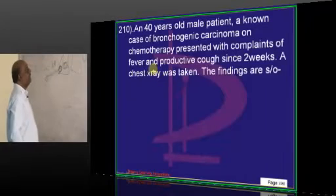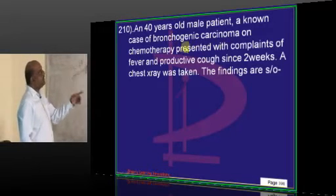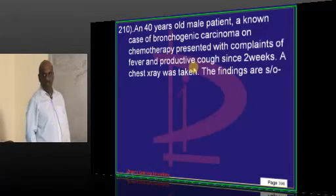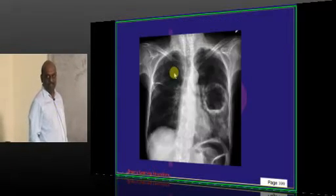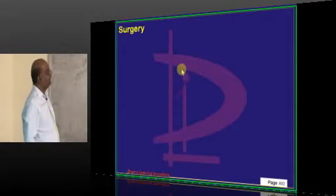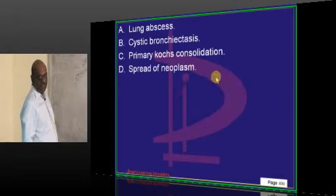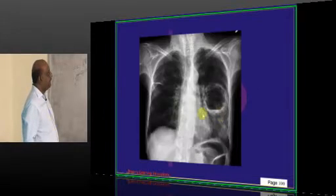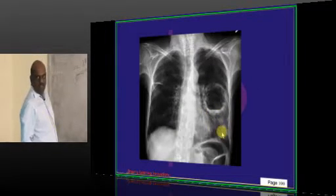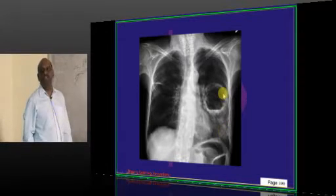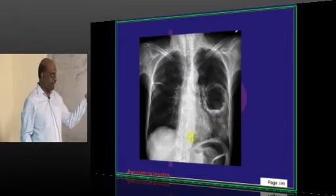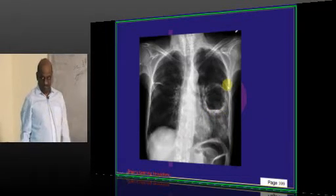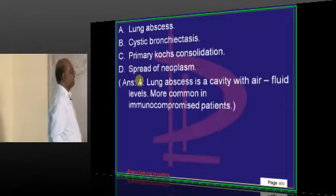Why it cannot be spread of neoplasm? It is a known case of bronchogenic carcinoma, presented with fever and productive coughs. Cavitating lesion. Give importance to the history. Fever, why will it come? Unless the infection is there. If infection is there, this kind of a shape of infection is abscess. Simple.